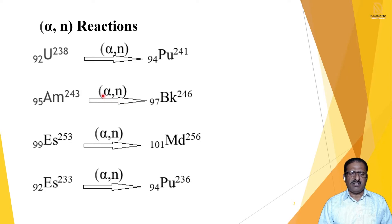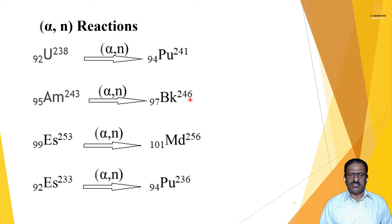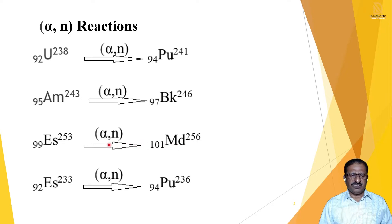Third reaction: Es-99-253 undergoes alpha-N reaction. Atomic number increases by 2: 99 becomes 101, that is Mendelevium (Md). Mass increases by 4 due to alpha particle, but decreases by 1 due to neutron removal, so total increase is 3. Thus 253 + 3 = 256, giving Mendelevium-101-256. In neutron bombardment, mass increases only by 1 and atomic number does not increase. But with alpha particle bombardment, atomic number increases by 2 and mass directly increases by 4.